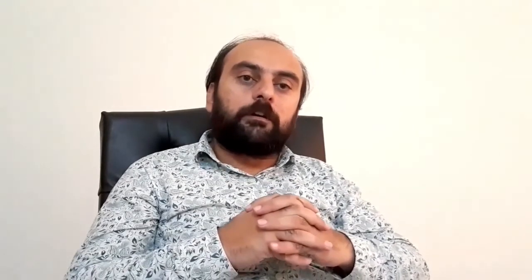Physiological maturity is when the crop or the economic part has accumulated maximum dry matter — for example, the loss of green color by pods of soybean, or when the sunflower head turns yellow from green. Harvest maturity is when the product or economic product is at its peak quality and quantity. For example, in rice, 20 to 22 percent moisture content is considered suitable for harvesting.